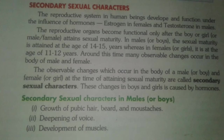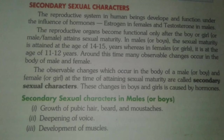In males or boys, sexual maturity is attained at the age of 14 to 15 years, whereas in females or girls it is around the age of 11 to 12 years. Around this time, many observable changes occur in the body of the male and female, so you can detect or feel whether an individual has reached the age of maturity or not.